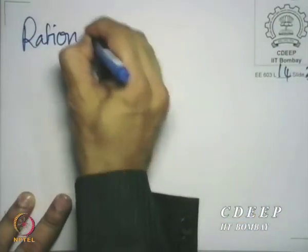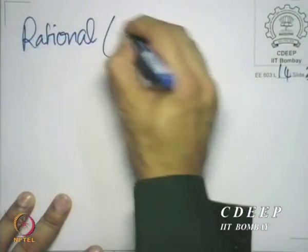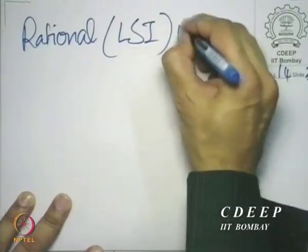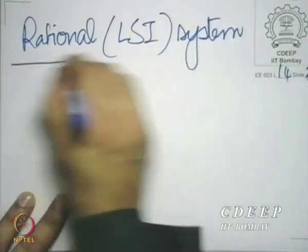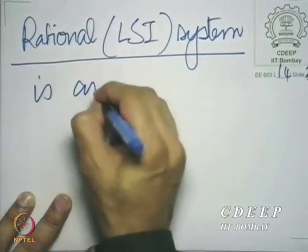This generalization does not stop there. There are certain important properties that rationals have, and systems whose impulse response has a rational Z-transform are called rational. Now let us define rational systems. The word rational system immediately refers to an LSI system — otherwise it has no meaning. A rational LSI system is an LSI system whose impulse response has a rational Z-transform.